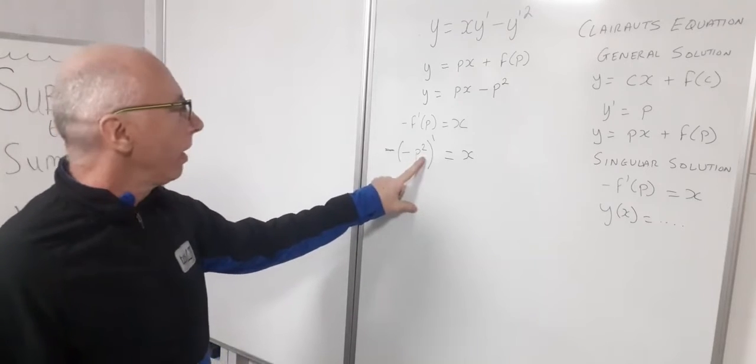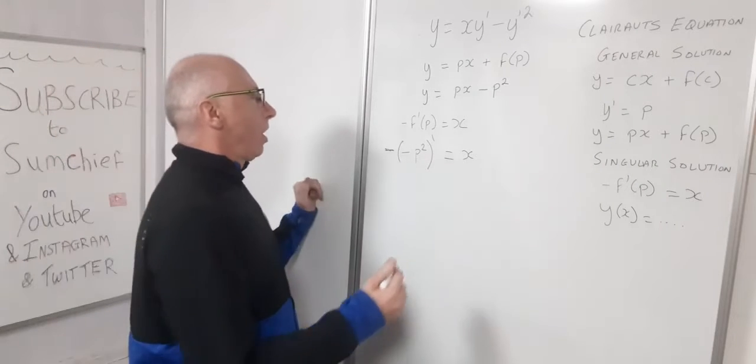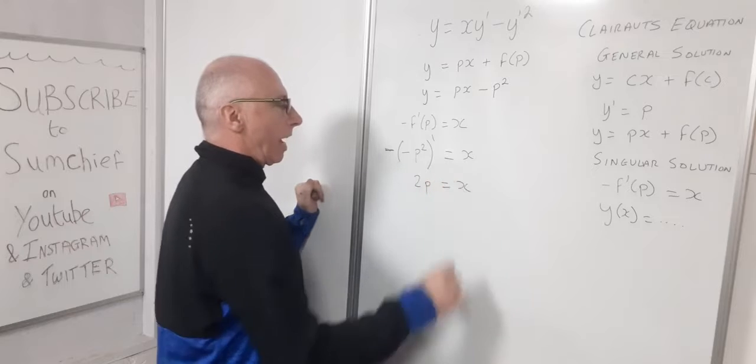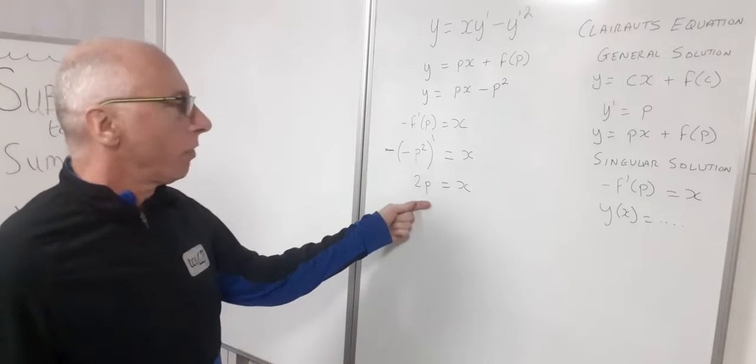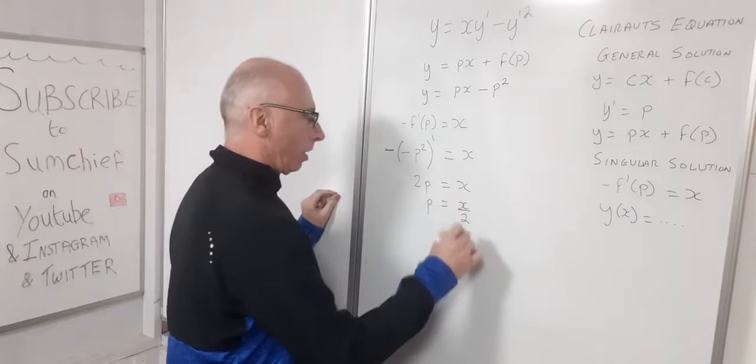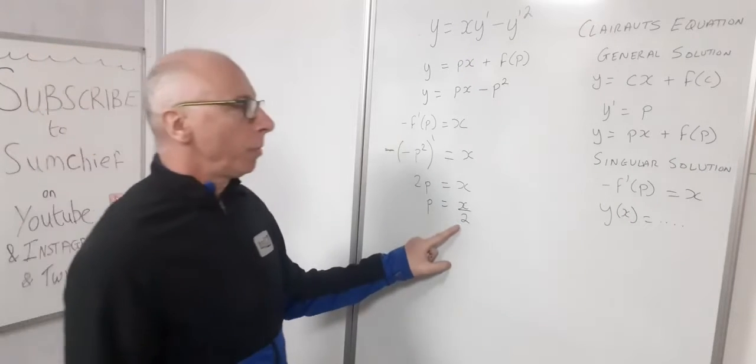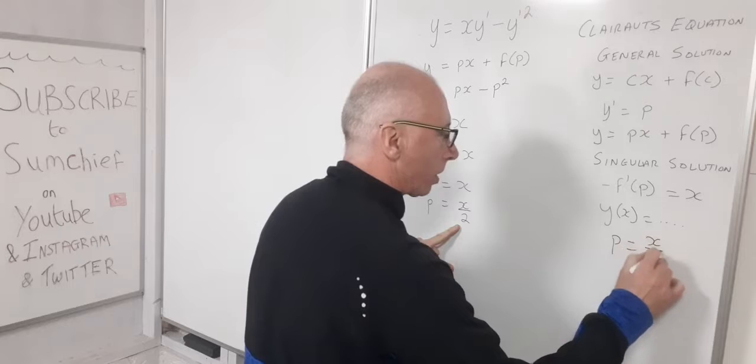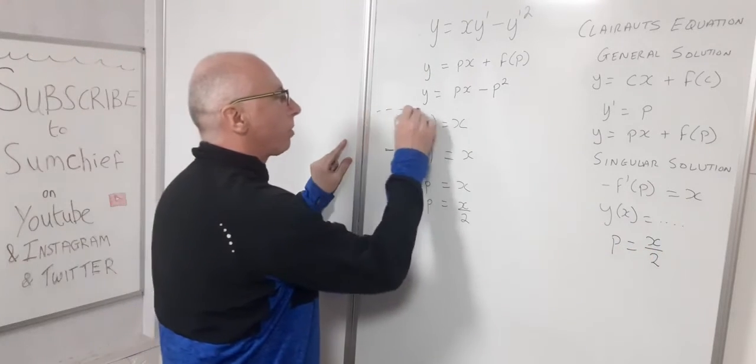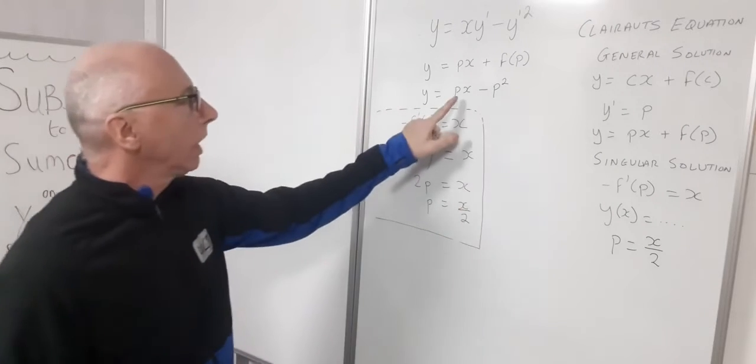Now what's the derivative of here of our negative p squared with another negative. So now what we have is 2p equals x. So therefore now solving for our p, p equals x over 2. So now that's going to help us build our answer p equals x over 2. Okay so now let's just put this in a box here and let's work with this.